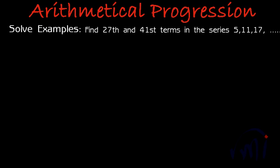Hi, so here we have a very simple solved example in Arithmetical Progression. Let's first read the question. Question says, find the 27th and 41st terms in the series 5, 11, and 17.